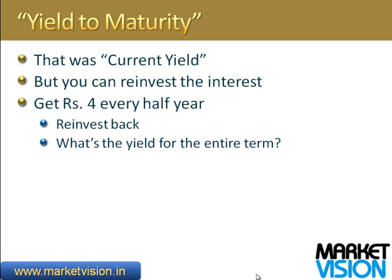You put in 110 today, you get 4 rupees every 6 months for the next 10 years, and at the end of 10 years you get back 100 rupees. You also reinvest the interest payments that you receive. What is the uniform rate across the entire period that accounts for all of this? That is what is called yield to maturity.